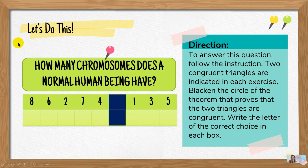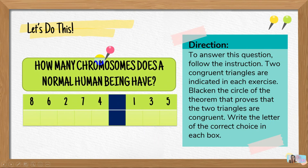Now let's have an activity. How many chromosomes does a normal human being have? We have a decoder to answer this question. Two congruent triangles are indicated in each exercise. Blacken the circle of the theorem that proves that the two triangles are congruent, and write the letter of the correct choice in each box. We're going to have eight questions, each corresponding to a right triangle congruence theorem. Are you ready? Let's begin.